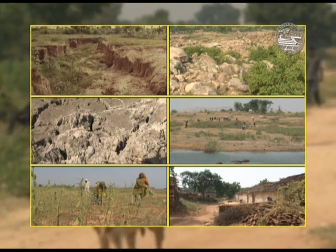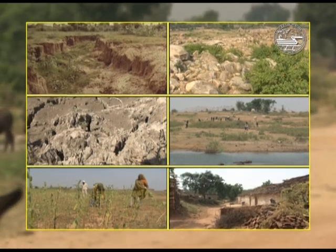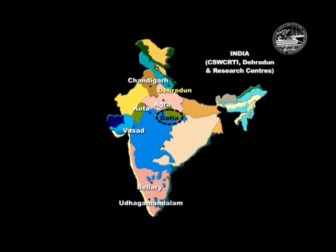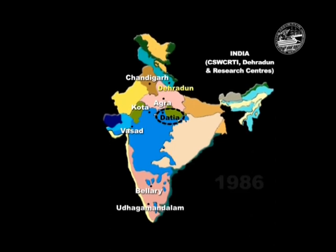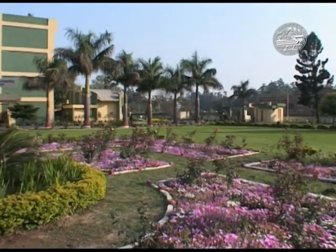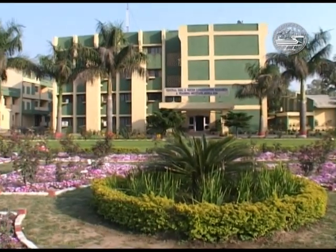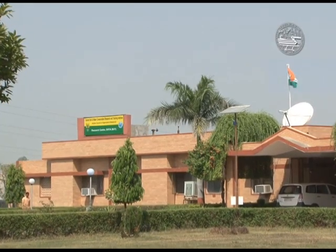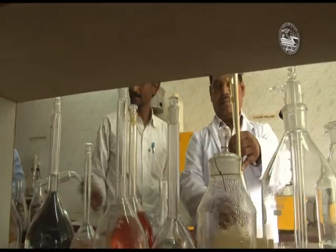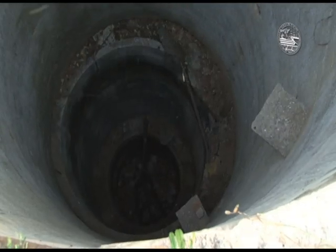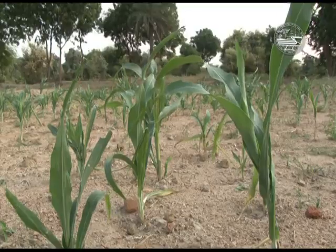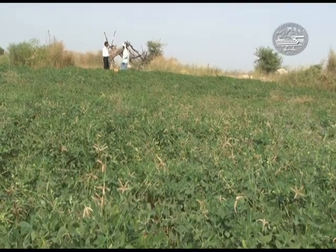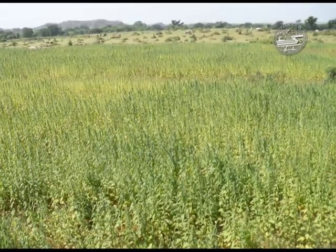Considering the severity and peculiarity of the problem in the Bundelkhand region, the Indian Council of Agricultural Research, or ICAR, established a research station in Datia district of Madhya Pradesh in September 1986 under the aegis of the Central Soil and Water Conservation Research and Training Institute, Dehradun. The primary mandate of the research centre at Datia is to undertake research and develop technologies to tackle water scarcity and land degradation problems, to enhance productivity of all primary production systems and thereby improve the livelihood security of the rural population in the Bundelkhand region.